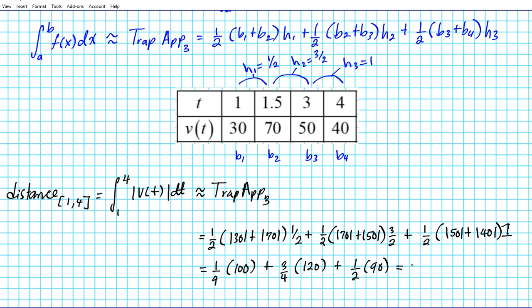A quarter of 100 is 25 plus four goes into 120 thirty times, times 3 is 90, plus half of 90 here for trapezoid three is 45.